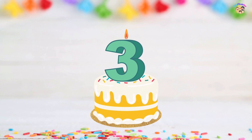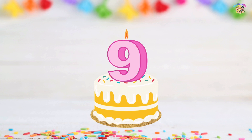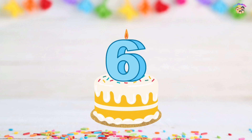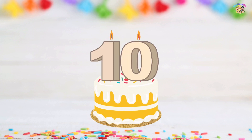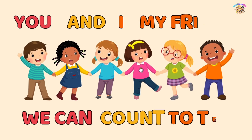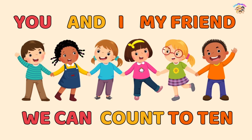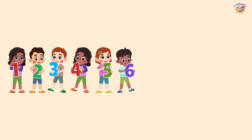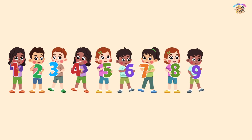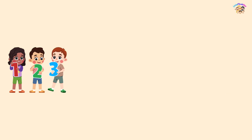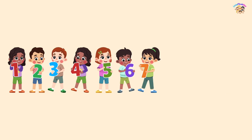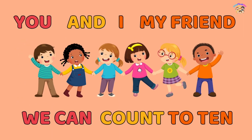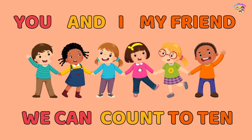One, two, three, four, five, six, seven, eight, nine, ten. One, two, three, four, five, six, seven, eight, nine, and ten. You and I, my friend, we can count to ten. One, two, three, four, five, six, seven, eight, nine, ten. One, two, three, four, five, six, seven, eight, nine, and ten. You and I, my friend, we can count to ten.